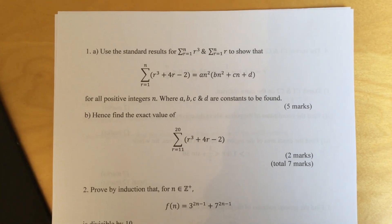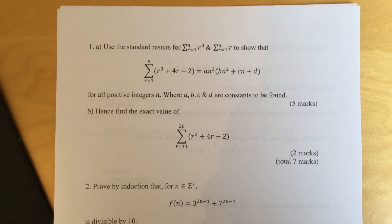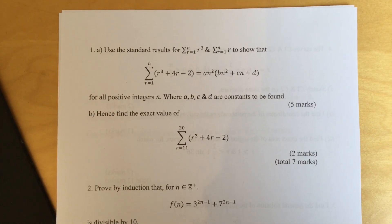Part b. Hence find the exact value of sum of r equals 11 to 20 of r cubed plus 4r minus 2.